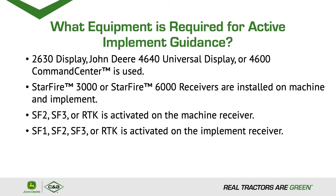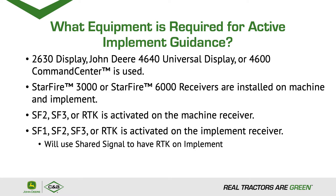On the implement receiver we need SF1, SF2, SF3, or RTK activated. We can also use shared signal, which will share the RTK level accuracy from the machine to the implement. Therefore, we do not need as high a level of accuracy on the implement.